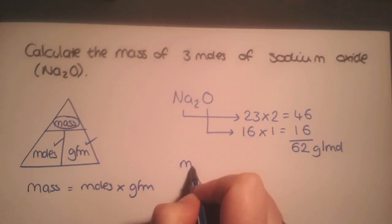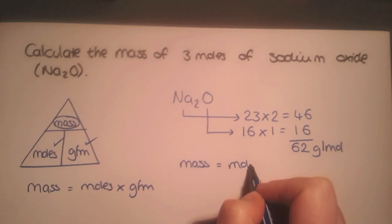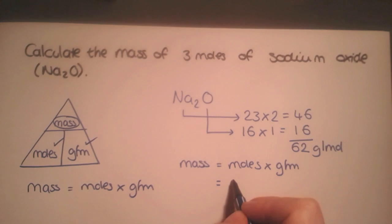We're now going to look at trying to find the mass of 3 moles. We would write out our equation: mass equals moles times gram formula mass. Then we substitute in the numbers. So 3 moles times 62 would give us a mass of 186 grams of sodium oxide. That there is our final answer.